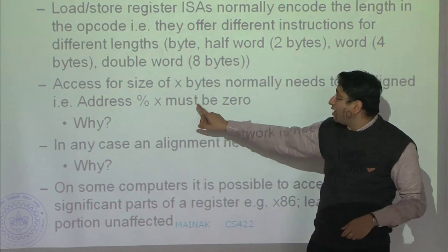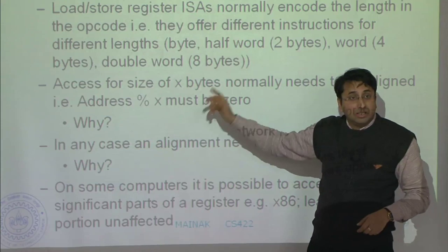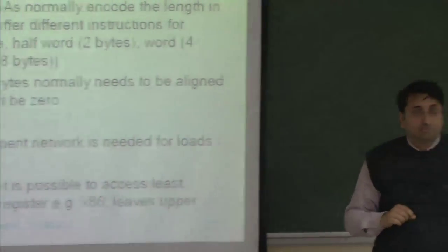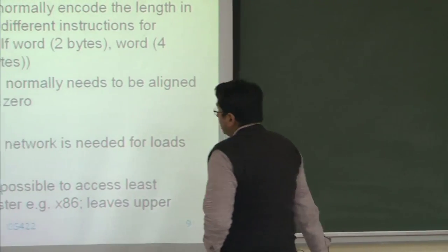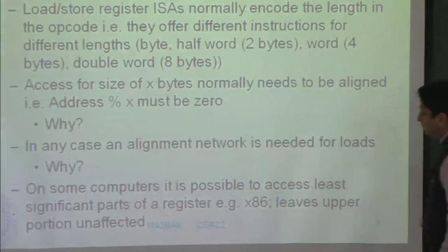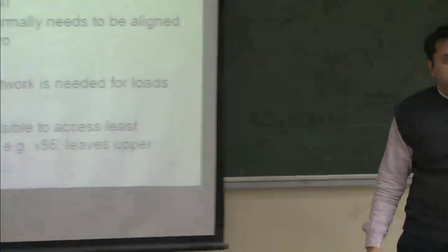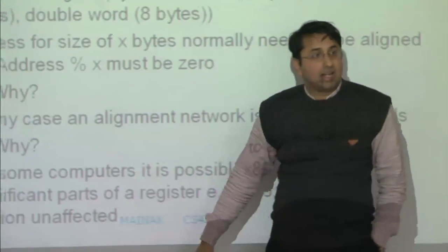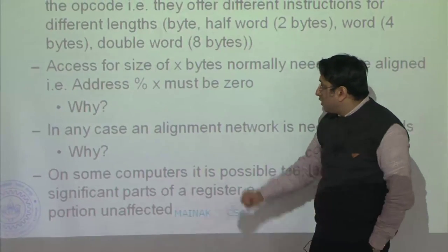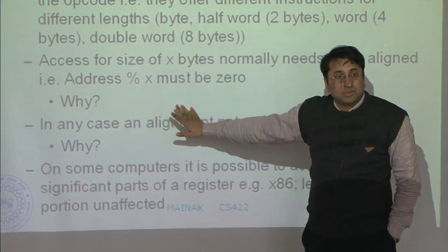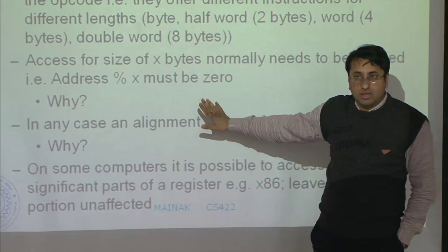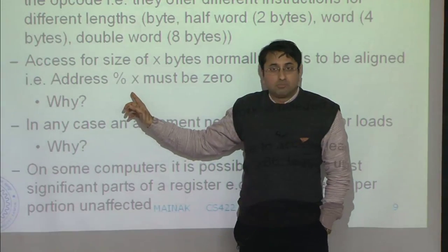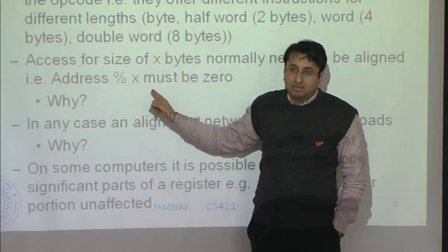If you design a new machine where x could take other values, this particular condition might change. These are called aligned accesses. x86 does not actually enforce aligned accesses — Intel processors can handle unaligned accesses as well. But MIPS does not allow unaligned accesses; all addresses must be aligned. It is the compiler's job to produce aligned addresses.